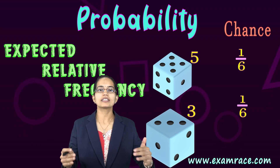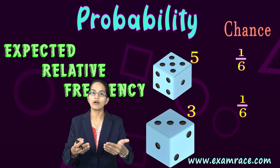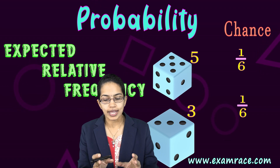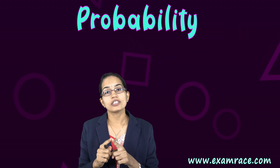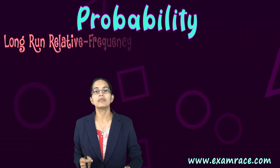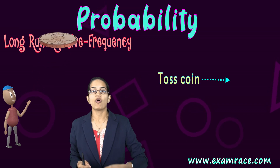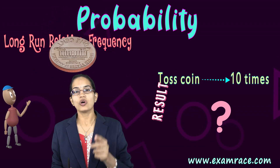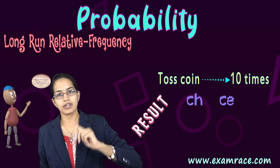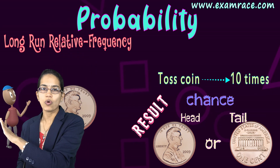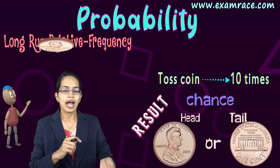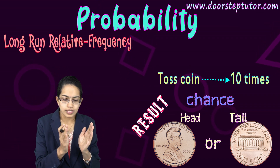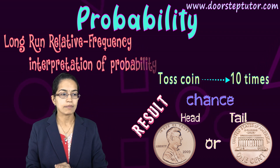Simply put, probability is the possible successful outcomes to the total number of outcomes. If I try to understand this over the long run — say I am tossing a coin 10 times — every time there could be a chance of getting head or tail for all 10 chances. That's where we understand the long-term relative frequency interpretation of probability.